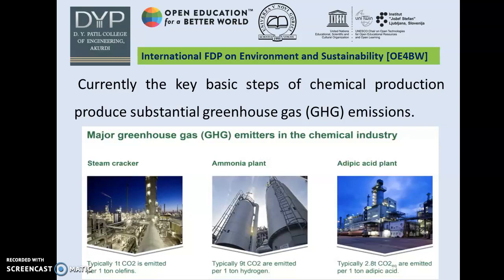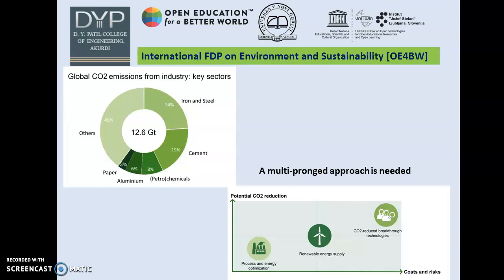I have considered three major greenhouse gas emitters: a steam cracker, an ammonia plant, and an adipic acid plant. The carbon dioxide emitted from these companies is really harmful for our environment. Global CO2 emissions come from different industries including iron and steel, cement, petrochemicals, aluminum, paper and others. A multi-pronged approach is needed to address this.